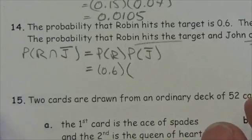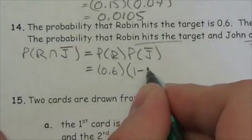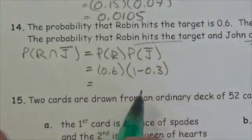We are told the probability that John hits it, and that's going to be 0.3, so the probability that he misses it will be 1 minus 0.3. Okay, that's the complement.